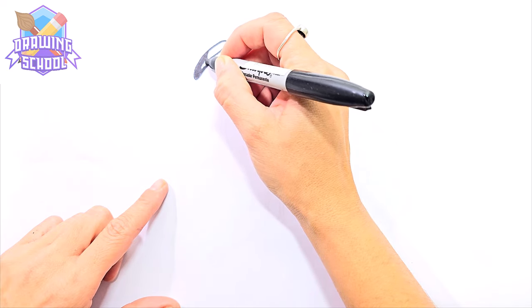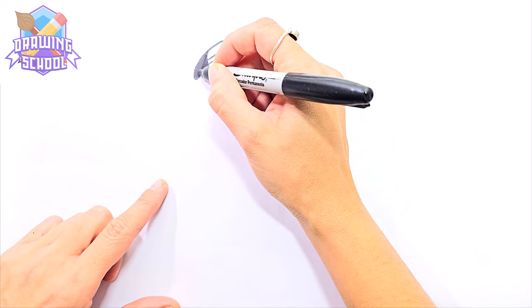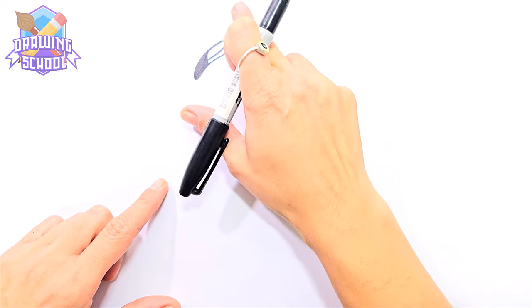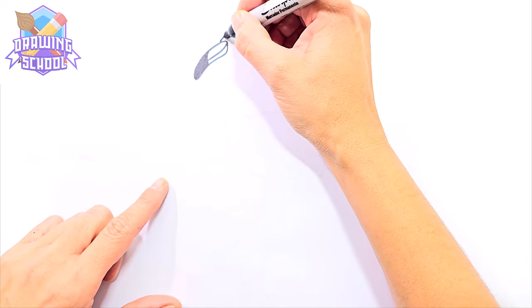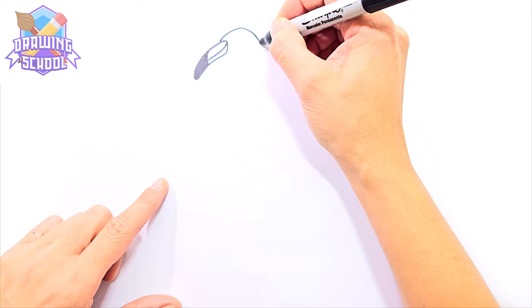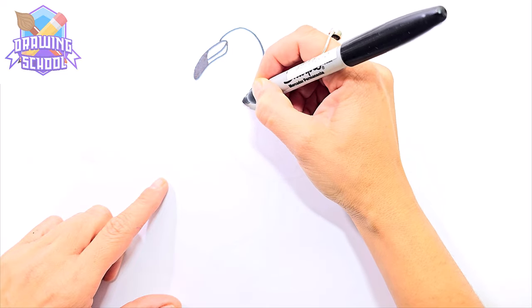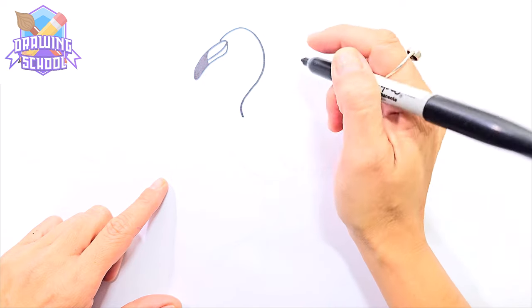Once we are done with the beak, we will continue with the head of the flamingo. To do this, we will draw a sinuous line in the shape of that, simulating the neck and elegant head of this beautiful bird. Now, we'll get into the face. We need to draw the little eye of our flamingo.